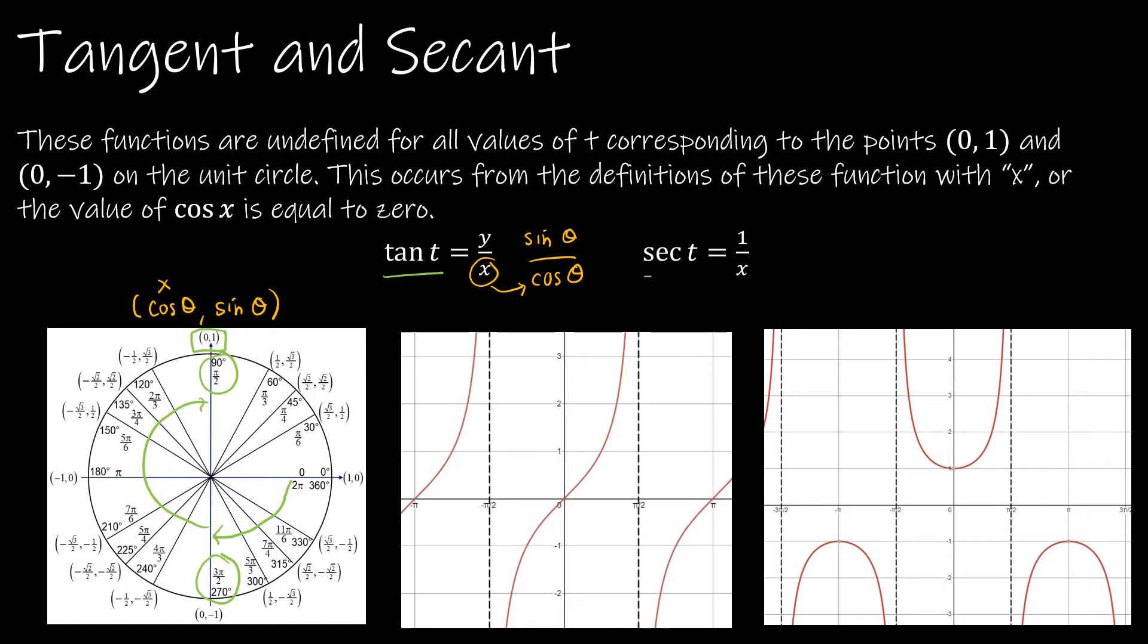For tangent and for secant, we're going to have asymptotes at pi n divided by 2, where n is an odd integer. So that's going to tell us 1 pi over 2, 3 pi over 2, 5 pi over 2, and then all of the negatives as well.